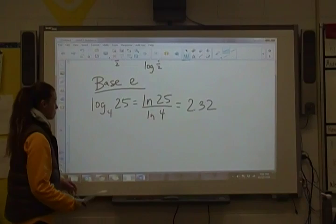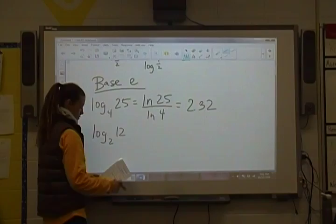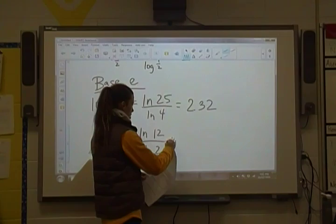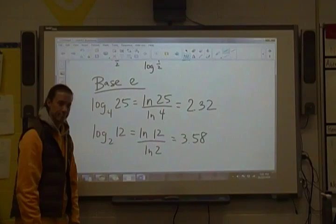And last example here, log base 2 of 12. So 2 to the what power gives us 12? Well we don't have one, so natural log of 12 divided by natural log of 2 is 3.58. Type that into your calculator, round to two decimal places.